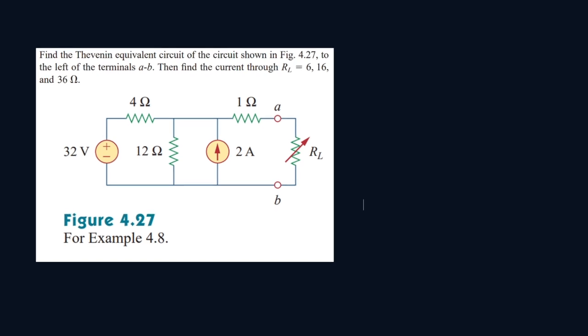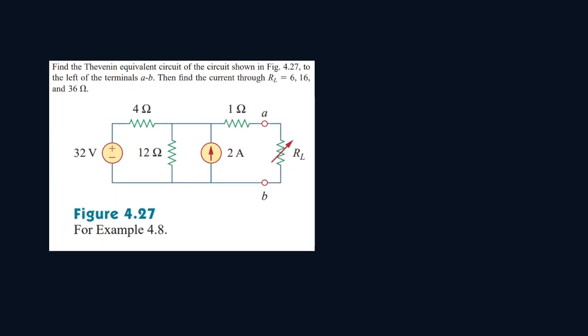Okay, so we have to find the Thévenin equivalent circuit of the following circuit and then we have to find the current passing through this portion when RL is equal to the following numbers.